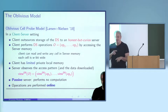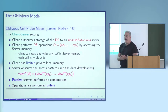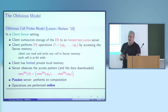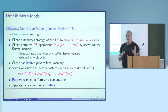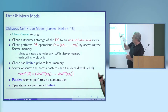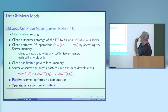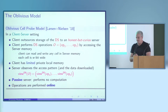This was extended to the oblivious cell probe model by Larsen and Nielsen at Crypto last year. It's cast in a client-server setting: the client outsources storage of a data structure to an honest-but-curious server, and performs a sequence of data structure operations — operation one, operation two, through operation L — which consists of accessing cells in cell memory.